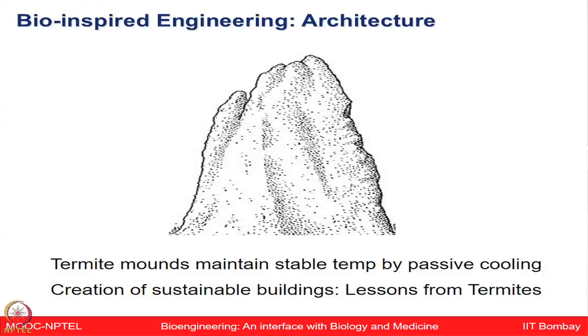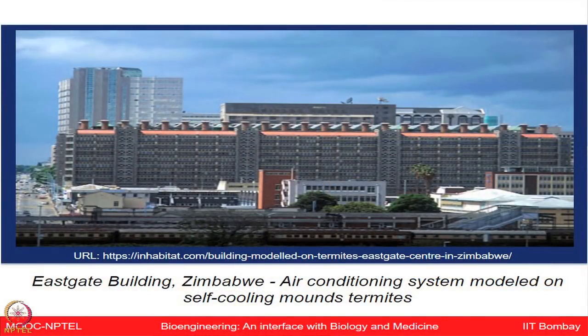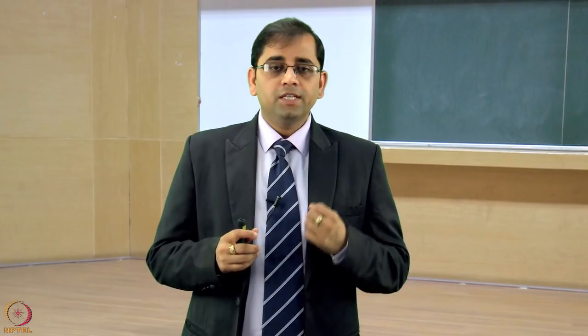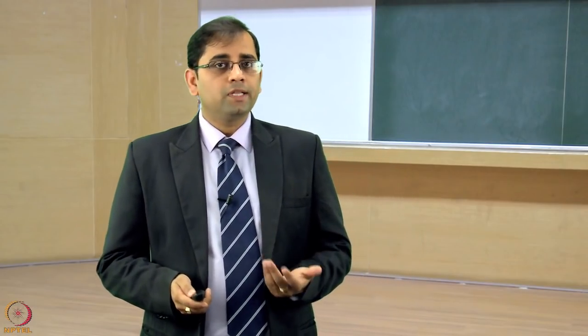Let us look at another example for architecture. Termite mounds maintain very stable temperatures inside through passive cooling. Lessons from termites can inform the creation of sustainable buildings. Look at this elegant building — the Eastgate building in Zimbabwe. Its air conditioning system is modeled on the self-cooling mounts of termites, resulting in a mechanical passive cooling system that uses only 10% of the energy used for ventilation in conventional buildings.